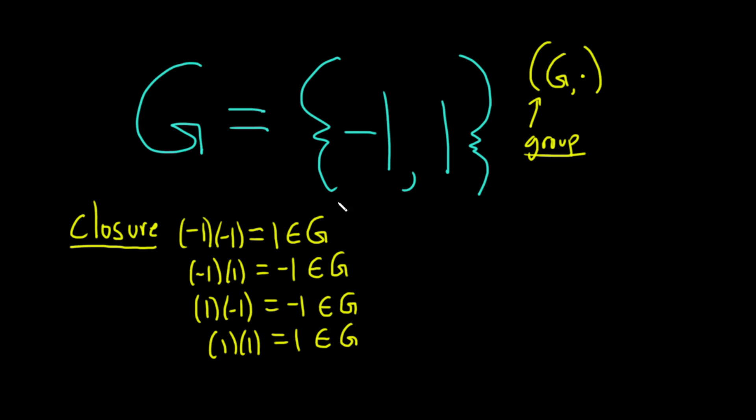Multiplication is a binary operation on this set. Given any two elements in the set, we take the product, it's also in the set. So closure is satisfied. So that is taken care of.